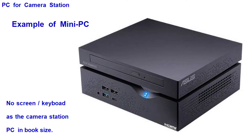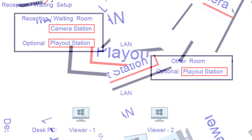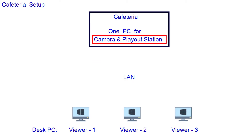You may set up a play out station to manage the camera station in entrances and hallways. The play out station may be monitored by a security officer for surveillance purposes. The live video as well as the recorded video are also useful for certain people to track events from their desk computers. For settings in other areas, the PC of the camera station can also serve as the play out station. The video from the reception room is useful for people to check the status of expected visitors, and the video from the cafeteria is useful for employees to see the waiting line.